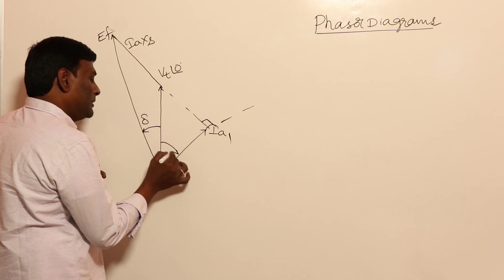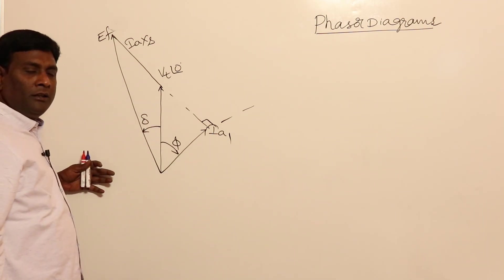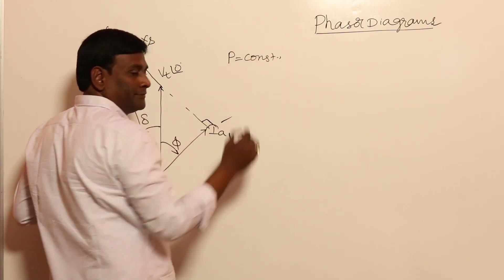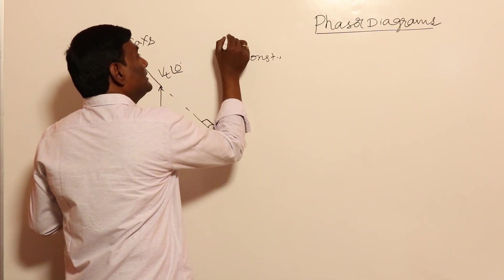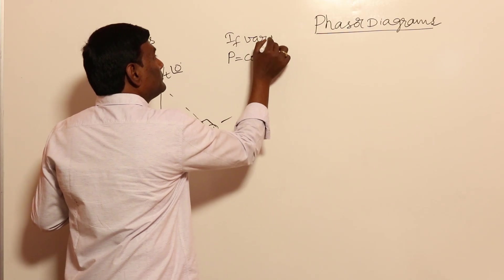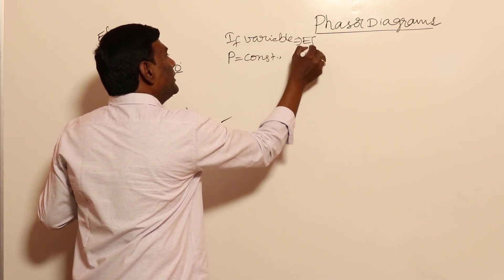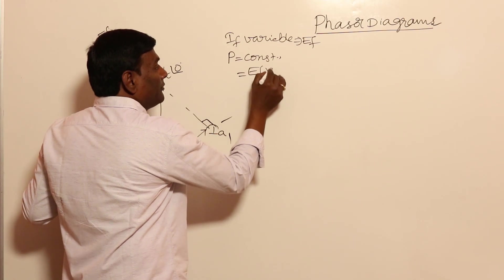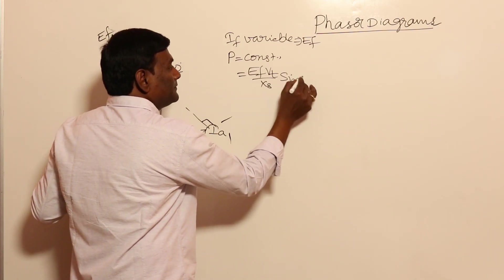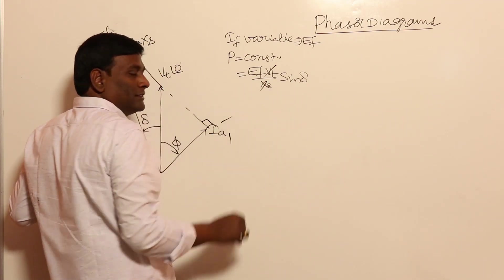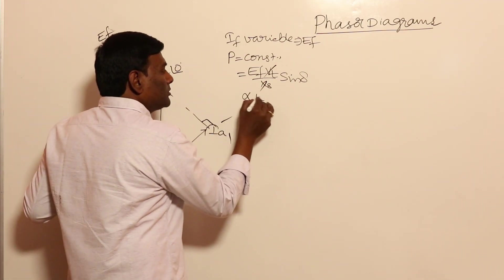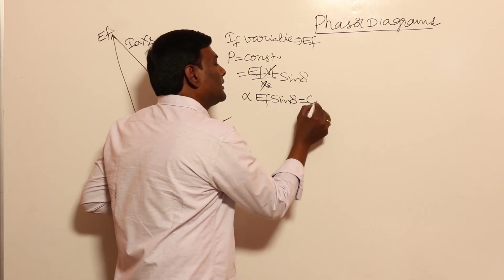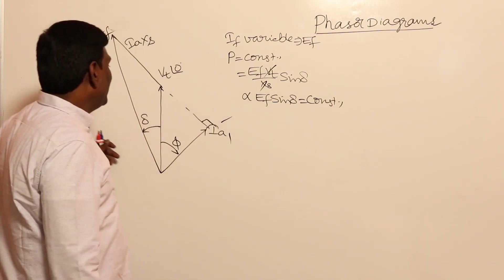This angle is delta and this is phi. Active power P is constant, and excitation — meaning field current IF — is variable. IF variable means EF is variable. Since P is constant, P = (EF × Vt / Xs) × sin delta, and Vt and Xs are constants, so EF sin delta must be constant.